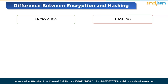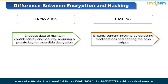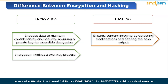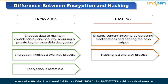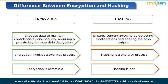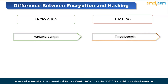Now coming to the difference between encryption and hashing. Encryption encodes data to maintain confidentiality and security, requiring a private key for reversible decryption. Hashing ensures content integrity by detecting modifications and altering the hash output. Encryption involves a two-way process — encryption and decryption — while hashing is a one-way process, producing an irreversible, unique digest. Both hashing and encryption play vital roles in handling data, messages and information in computing systems. They transform data into different formats, but encryption is reversible whereas hashing is not. Regarding output length: encryption has variable length and hashing has fixed length.